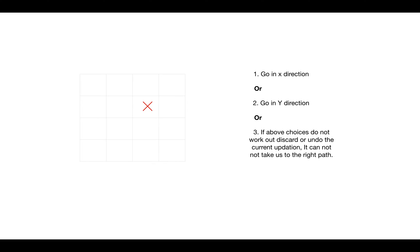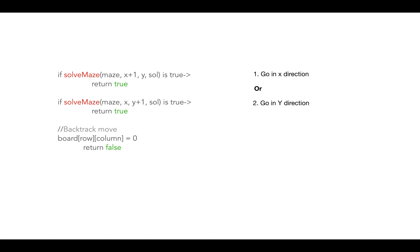In the recursive call to solve the maze, we increment X but keep Y the same when going forward in X direction. If going forward in X direction does not work out, we go in Y direction — keeping X the same and incrementing Y. If going forward in both directions does not work out, we undo our decision for the current cell.